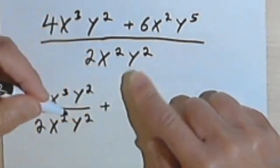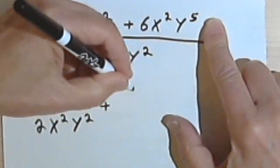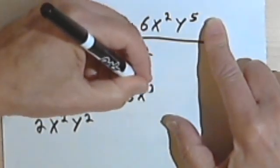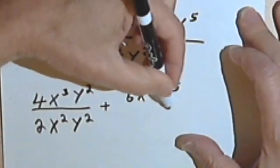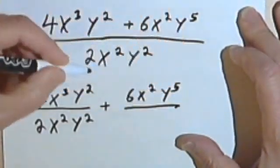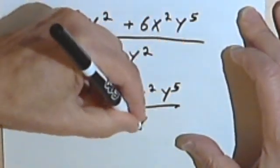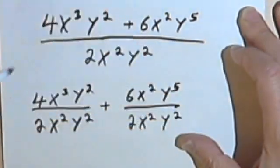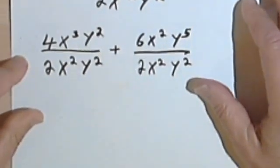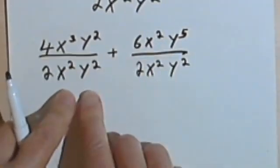And then we're going to take the second term, 6x²y⁵, and divide that one by the denominator, 2x²y². So now we've got two fairly simple problems.